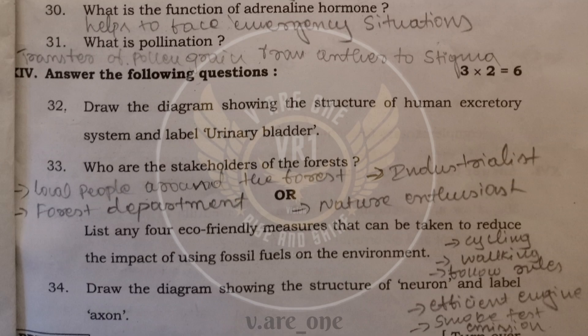30th, what is the function of adrenaline hormone? Adrenaline hormone helps to face the emergency situations. That's why it is called as emergency hormone. 31st, what is pollination? Pollination means transfer of pollen grain from anther to stigma. Then, how to write down the diagram of human excretory system, 32nd.